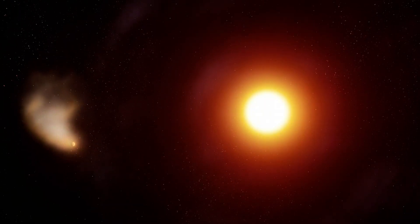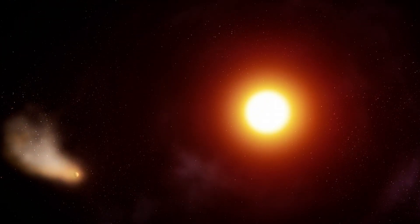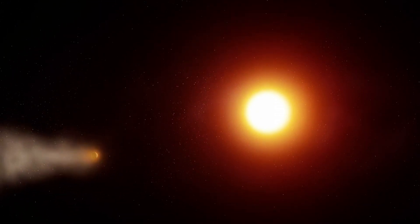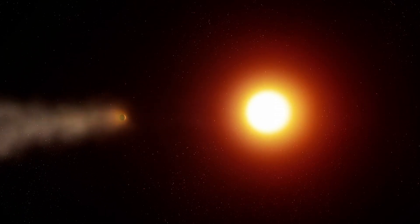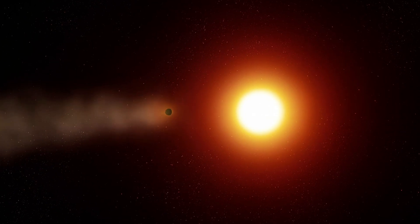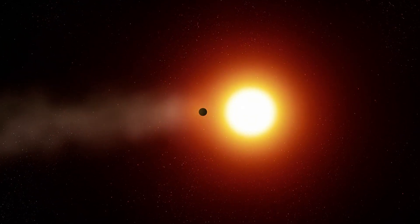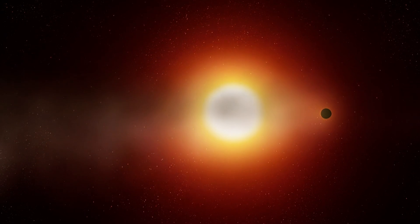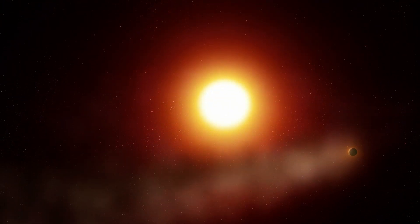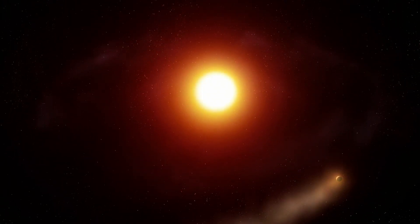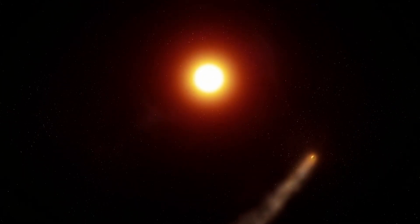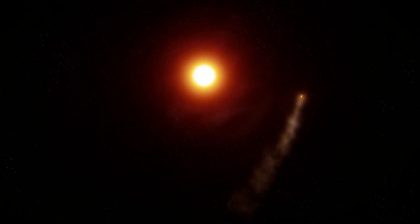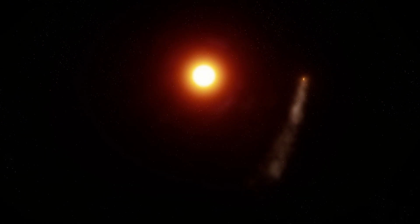Mercury breathes. Not with lungs, but with sunlight. Its exosphere, a wispy skin of atoms, is alive. Solar winds blast sodium into a glowing tail, stolen by the sun, reborn by meteor strikes. A tail so faint, you could see it from Earth with the right tools. A fragile dance and a clue to how planets die.